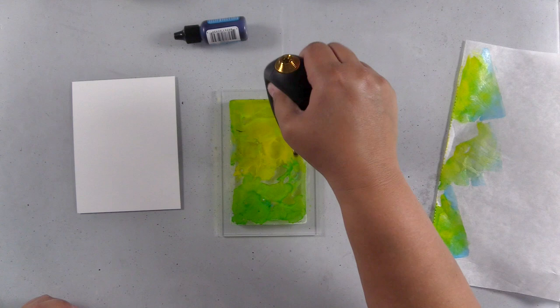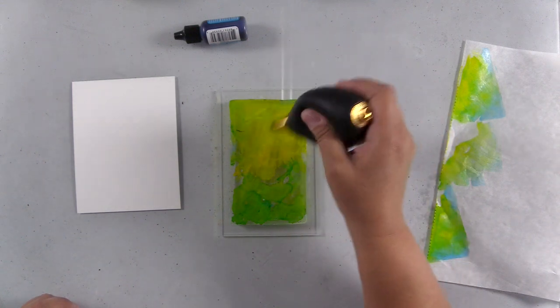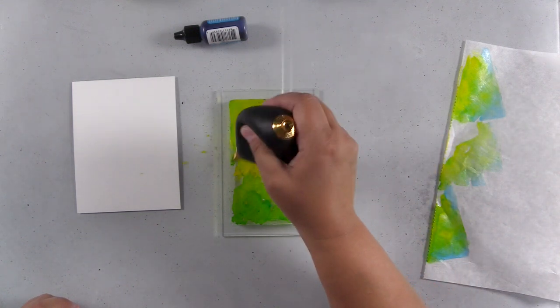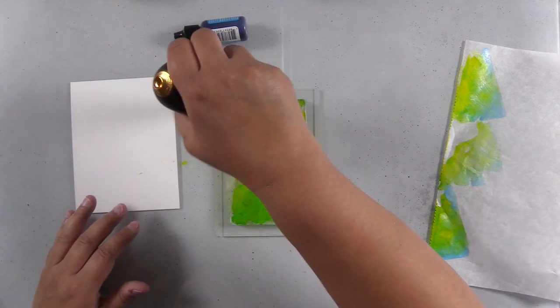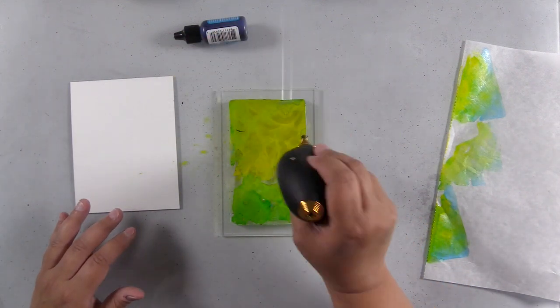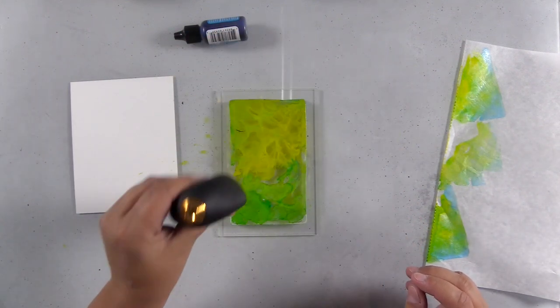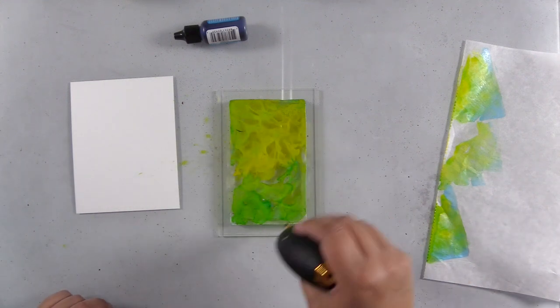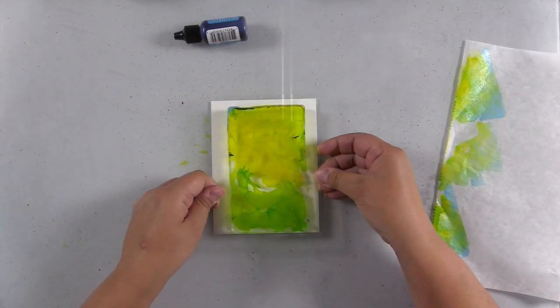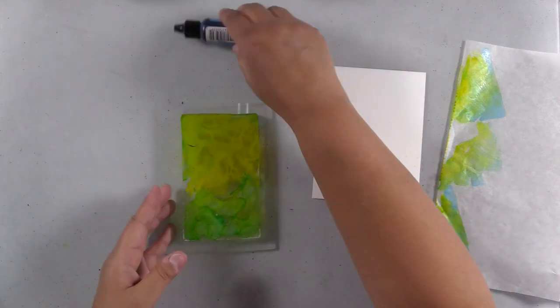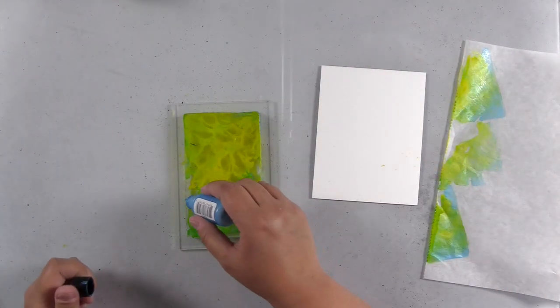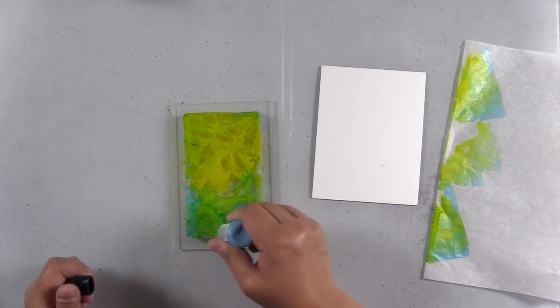I'm just moving this around, and whenever you're using alcohol ink on a gel plate, you want to make sure that it's completely dry before you add your acrylic paint. If you add your acrylic paint when the alcohol ink is wet, then it's just going to mix with that. So make sure it's completely dry, and then add your acrylic paint.